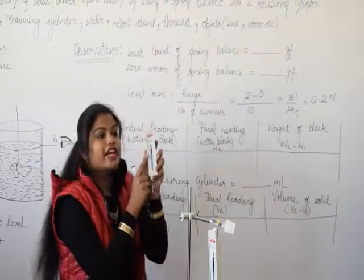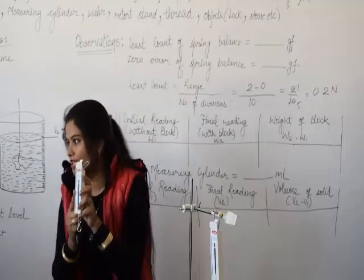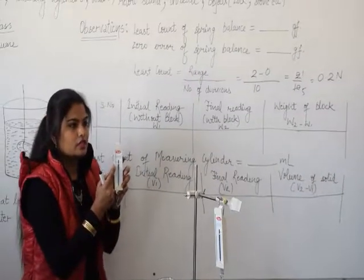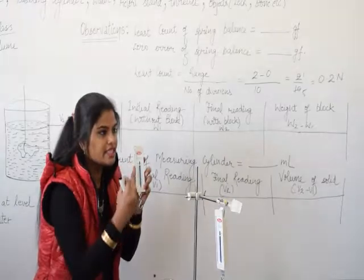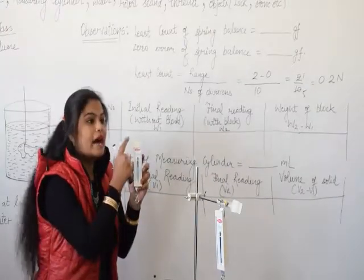So least count is range upon number of divisions. You can see here the range of the spring balance which I am holding here is zero to one. So how will you calculate range? Initial is zero. Final one is one. So one minus zero.